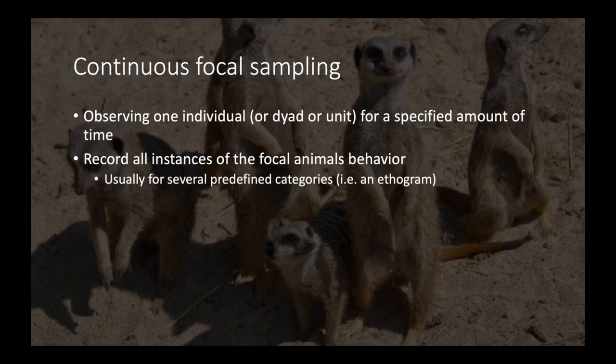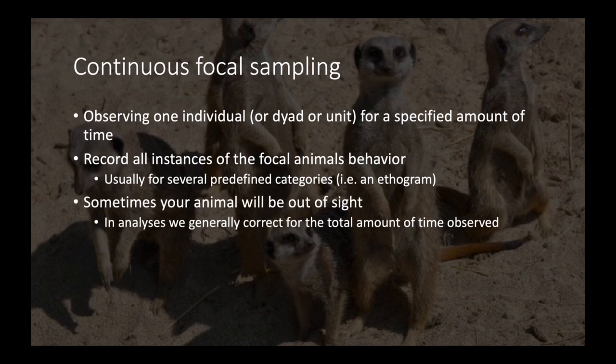Before you do the focal sampling, you and your partner are going to watch another video of meerkats and develop an ethogram on your own. In some cases your animal will be out of sight, so you want to make sure to have a category that indicates if they're out of sight.